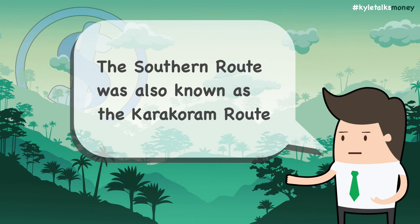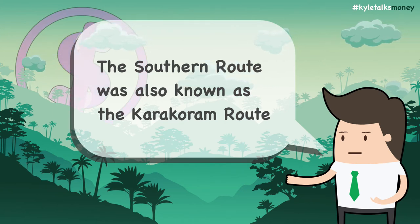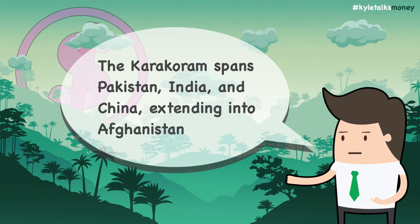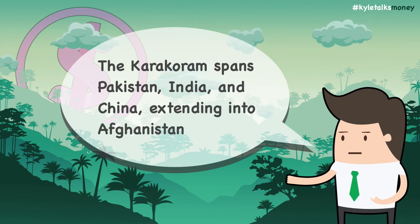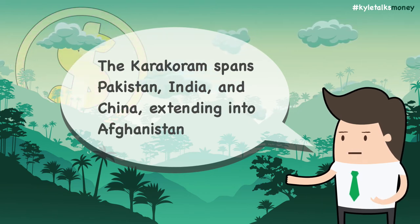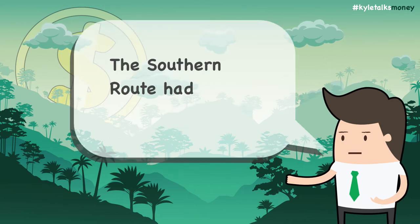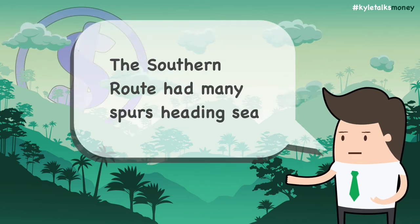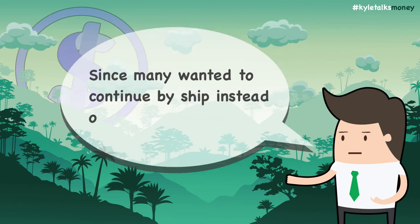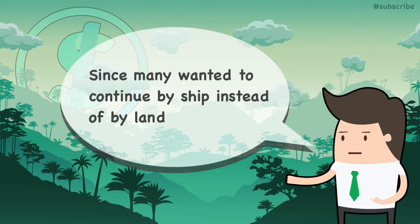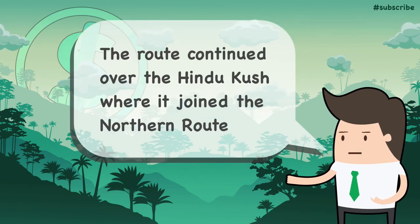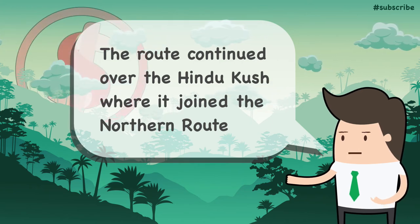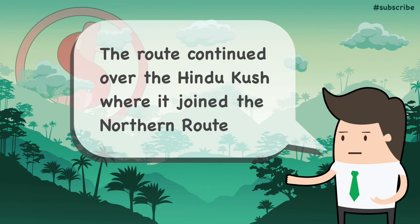The Southern Route went from China through the Karakoram Mountains, and because of this it was also known as the Karakoram Route. The Karakoram Mountain range spans the borders of Pakistan, India, and China, and also extends to Afghanistan in the northwest. West of the Karakoram Mountains, the Southern Route had many spurs heading south to the sea, since many travelers wished to continue by ship instead of going overland. For those who did not head south, the Southern Route continued over the Hindu Kush Mountains and into Afghanistan, joining the Northern Routes before reaching Merv in Turkmenistan.